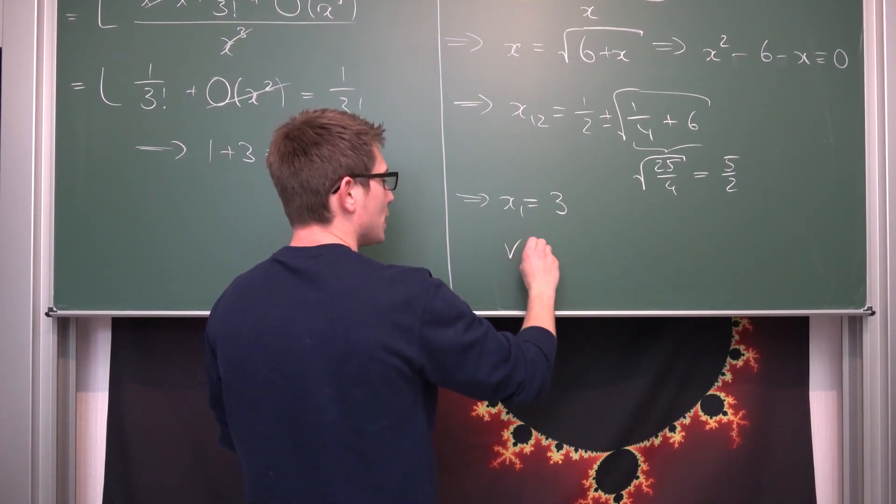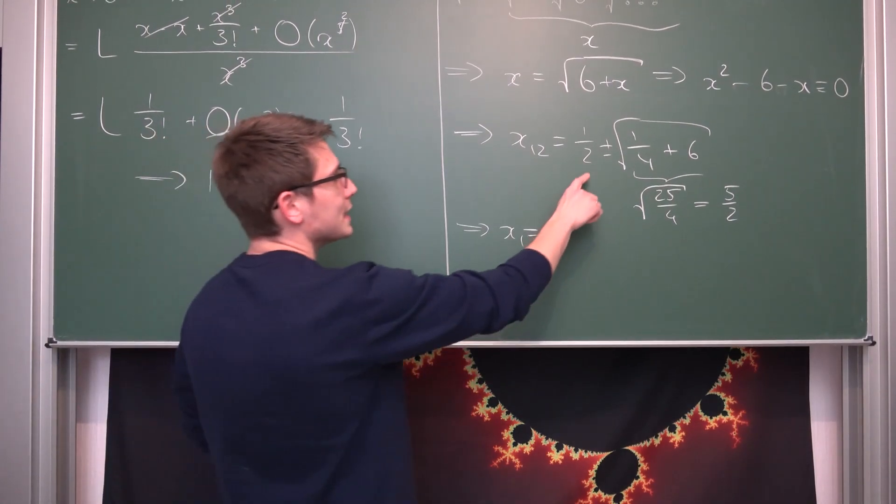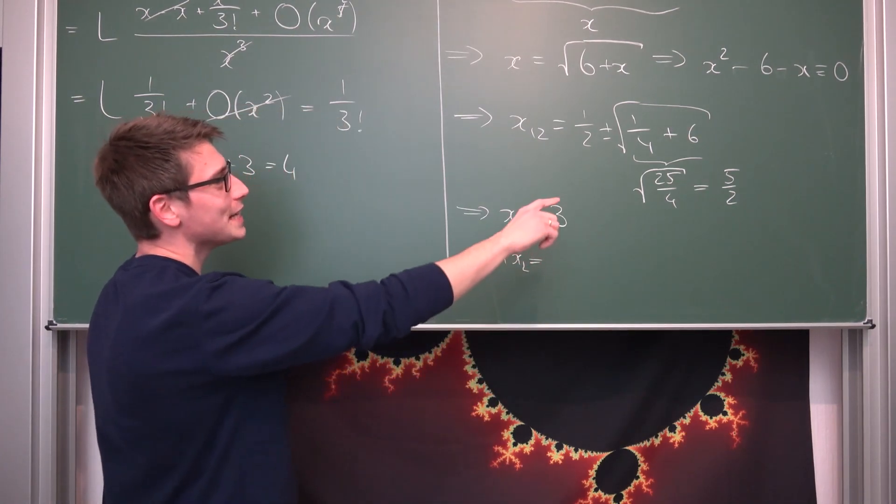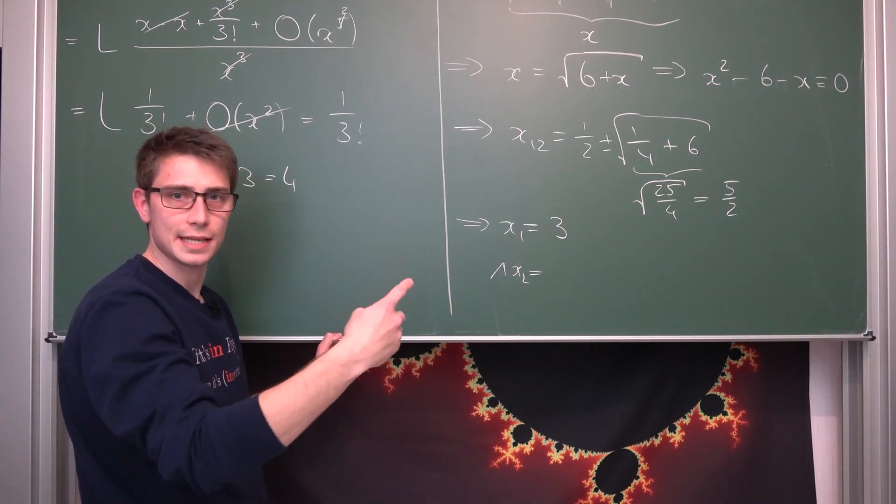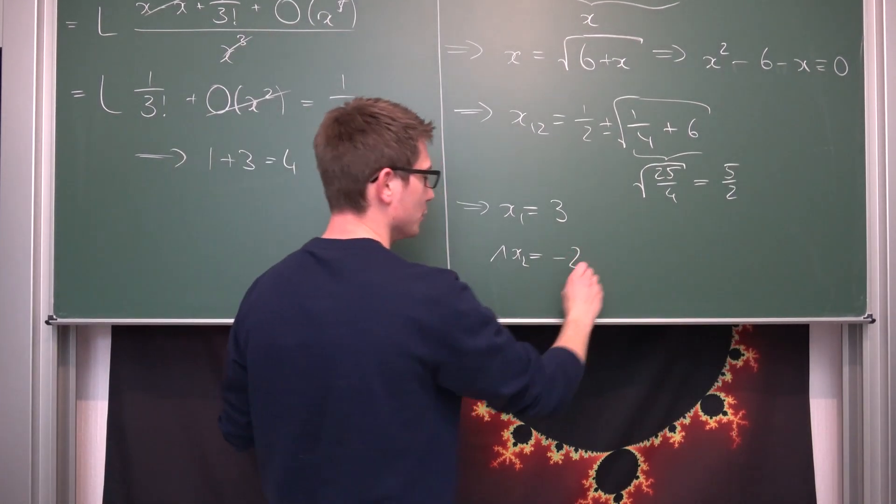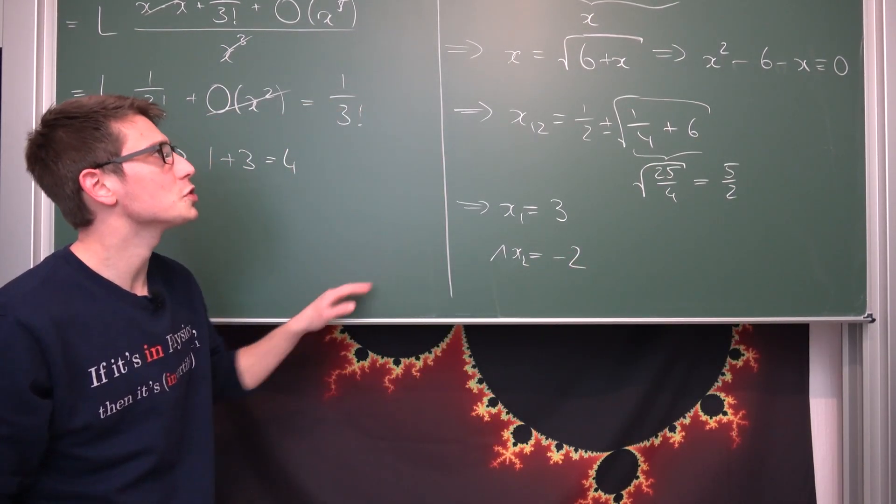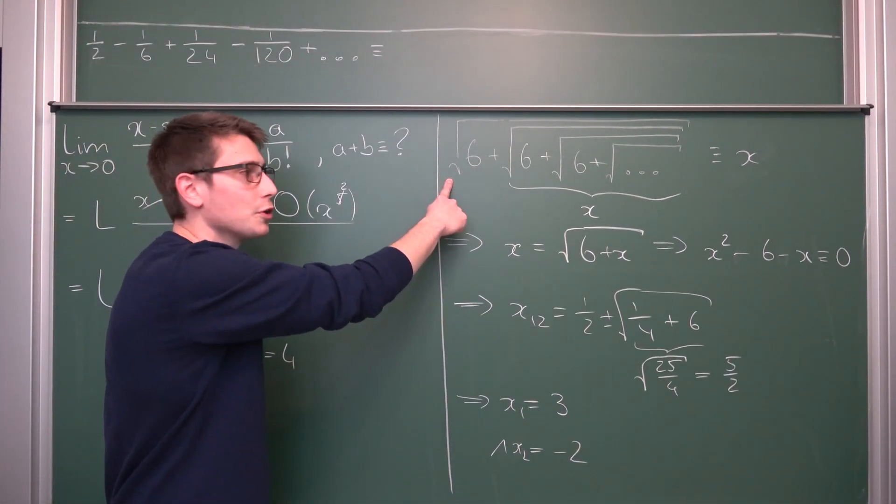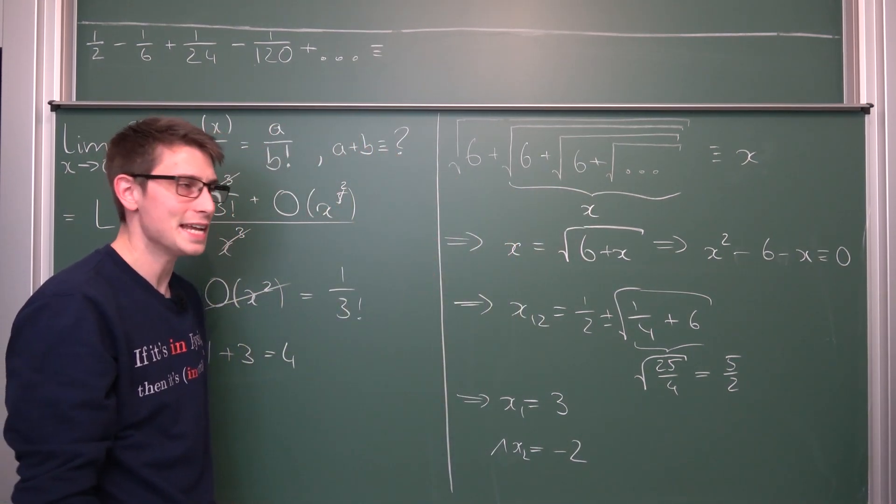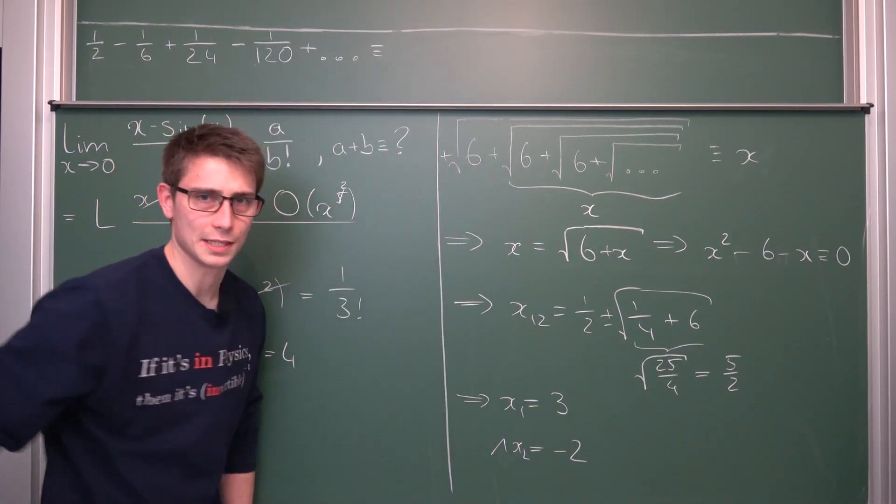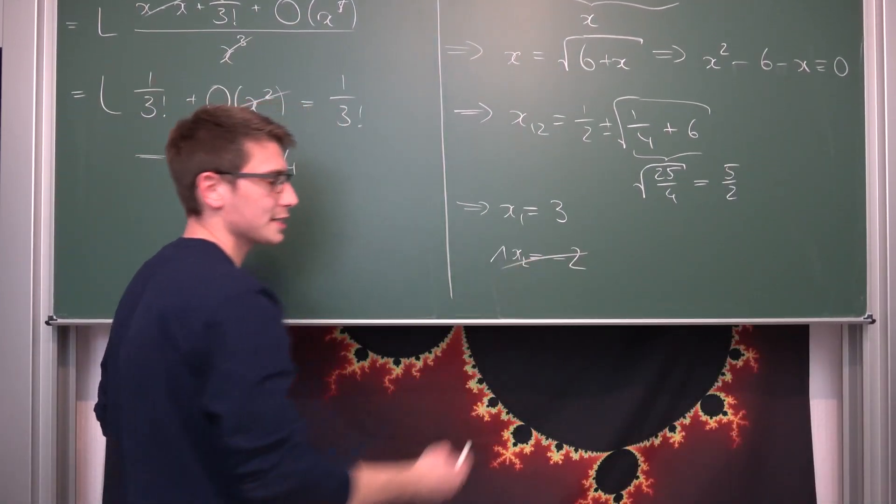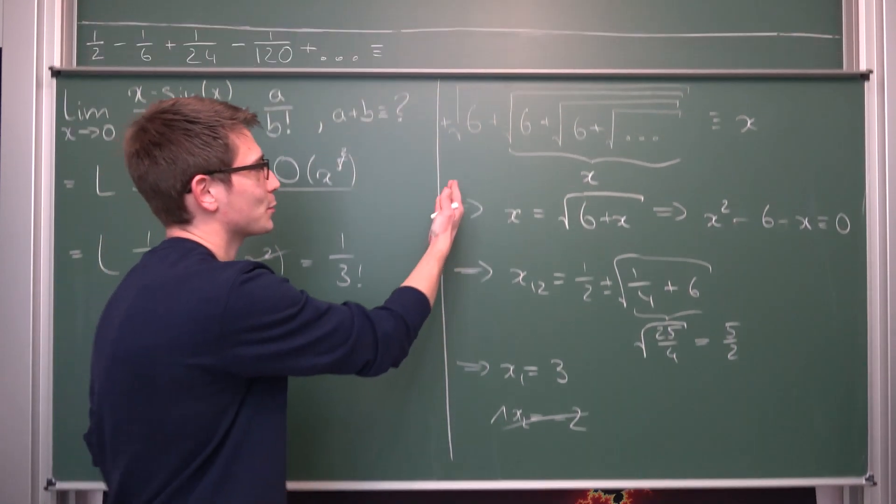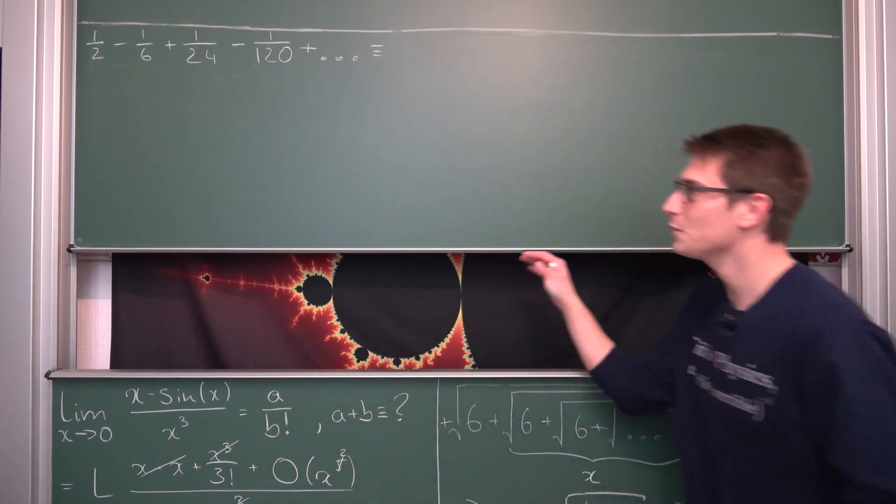And the other solution that we are going to have is x2 being one half minus 5 over 2 is negative 4 over 2 which is negative 2. But only one of those can be the solution to our problem. Because I want you guys to notice something. Namely what is the sign in front of our x, of our nested radical? It's going to be a positive sign. Meaning the second solution with the negative sign is negligible in our case. Meaning x is equal to 3 is our answer. Which is kind of cool that you can express number 3 using a nested radical. Were you able to figure it out? I hope you were able to do so.